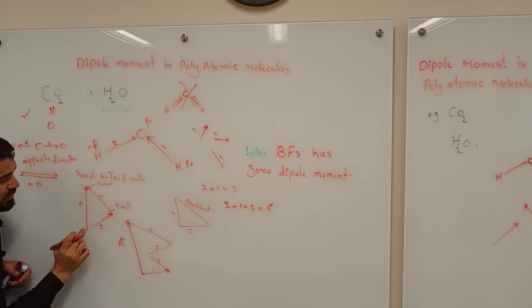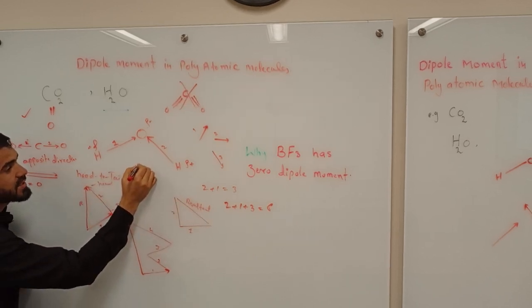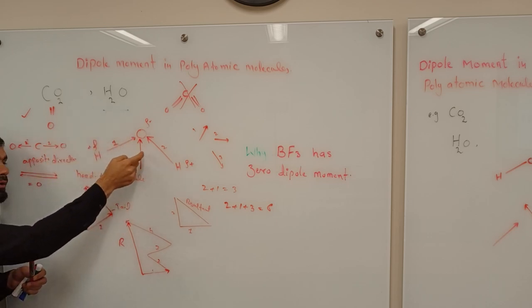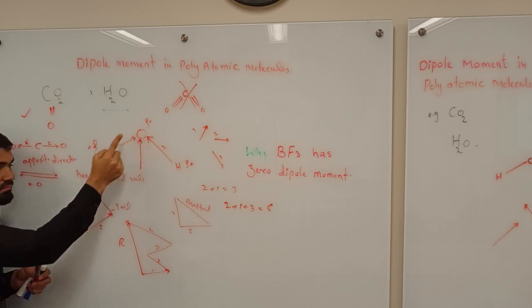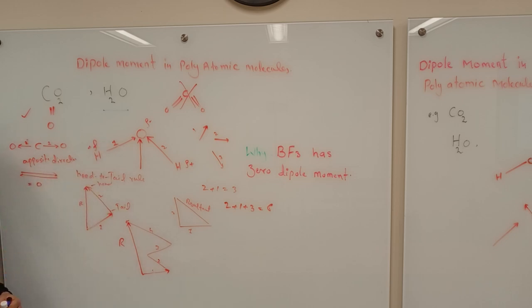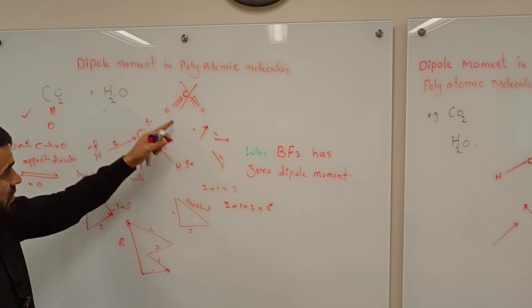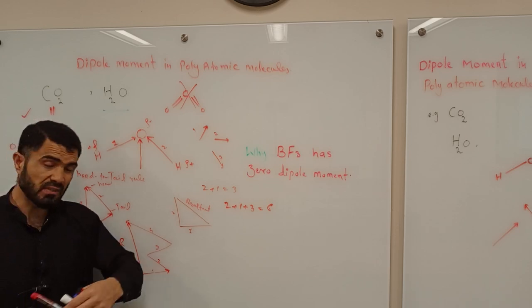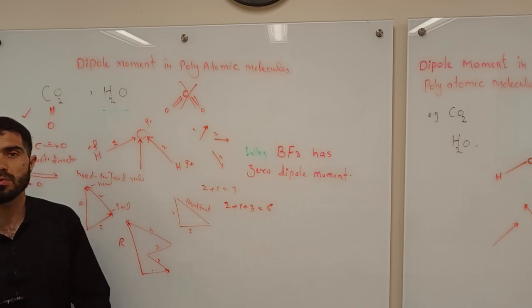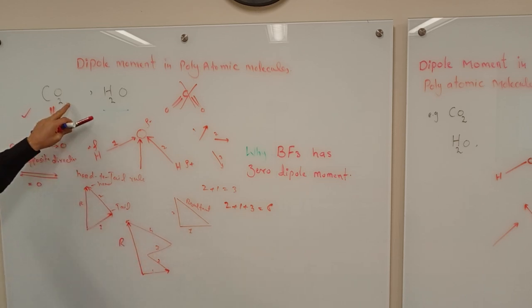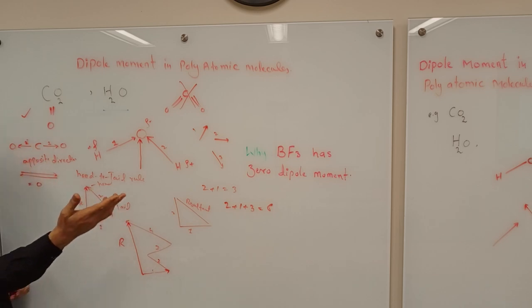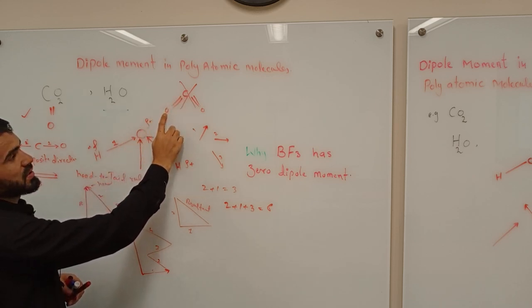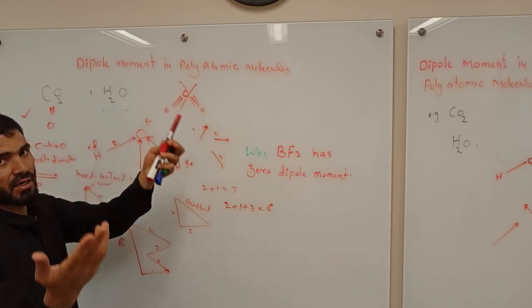So the two vectors add up to give a single resultant vector, and the direction is towards oxygen — upward. That is your resultant dipole moment for water. So water has a dipole moment due to its three-atom bent structure. But is it possible that every molecule with three atoms has a dipole moment? The answer is no. There are some molecules that contain three atoms but their dipole moment is zero. An example is carbon dioxide. Carbon dioxide was assumed to have a structure like water — carbon in the center with one oxygen on each side — so the two resultant vectors should not be zero.